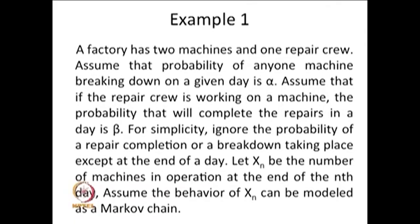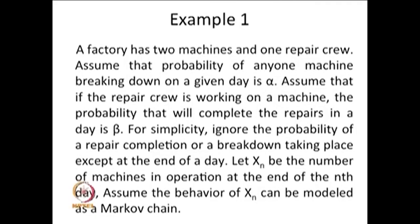The random variable Xn denotes how many machines are in operation at the end of the day. Therefore, the possible values of Xn — since we have two machines — will be 0, 1, or 2. This forms the state space S, which consists of the elements 0, 1, and 2.